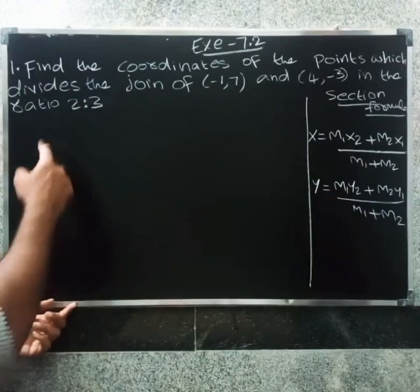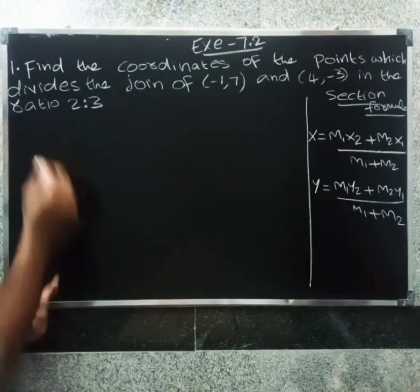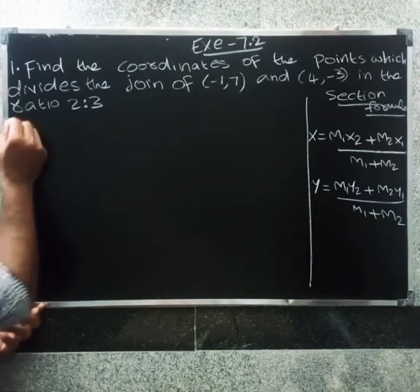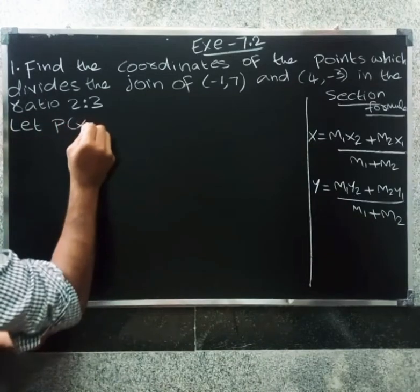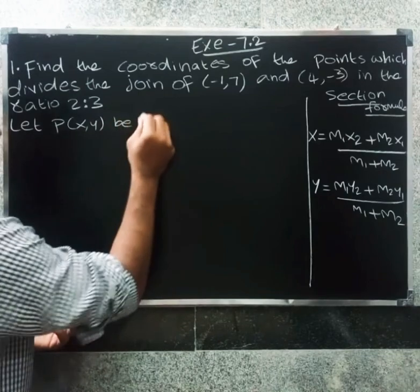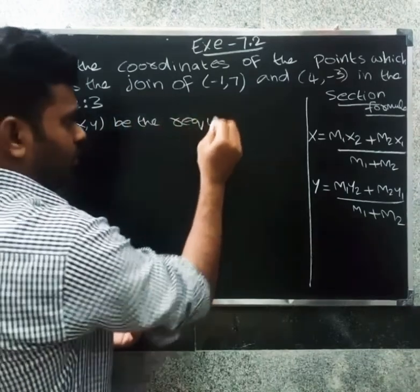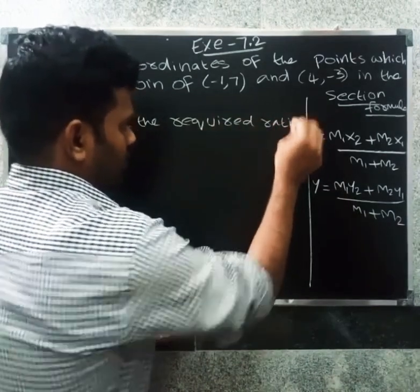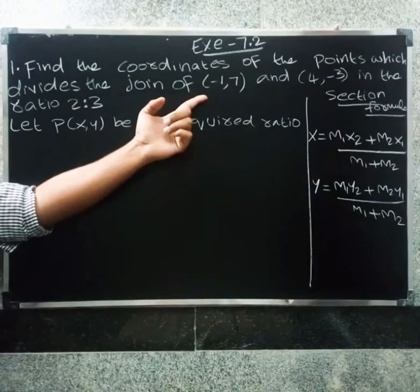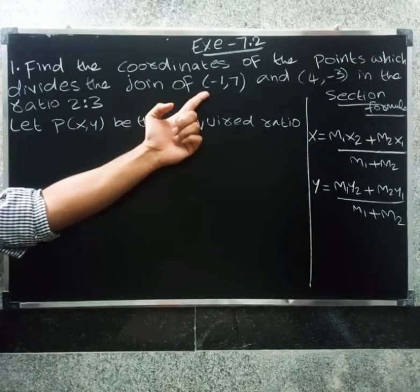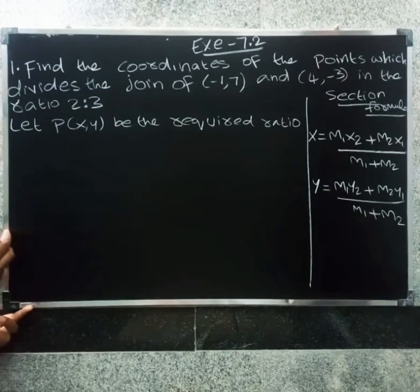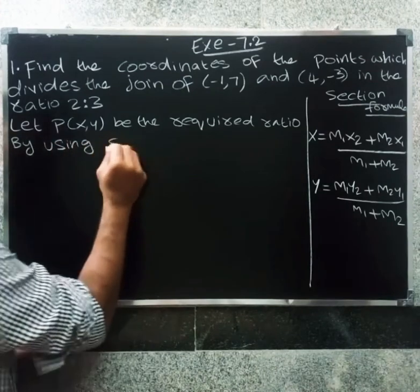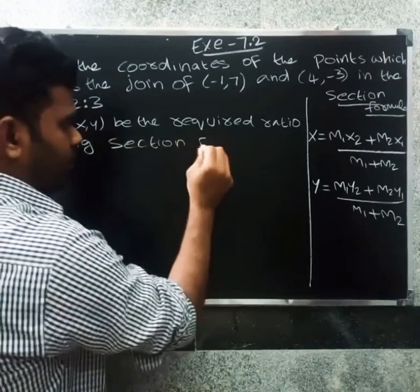Let P(x, y) divide the line segment. Let P(x, y) be the required point. The line segment joins (-1, 7) and (4, -3). By using the section formula: